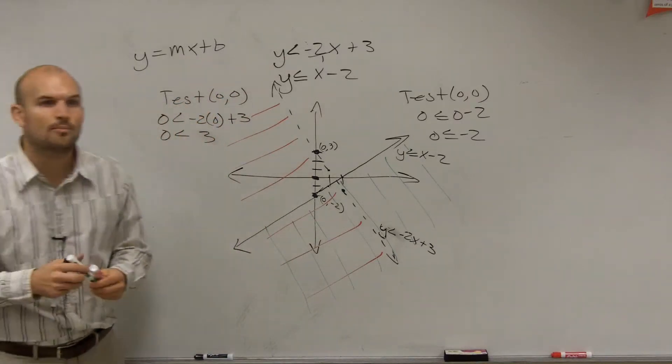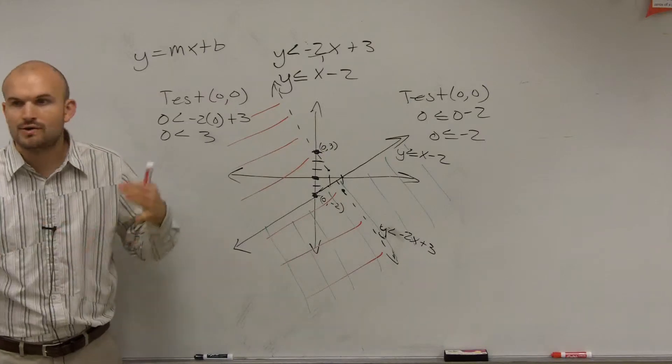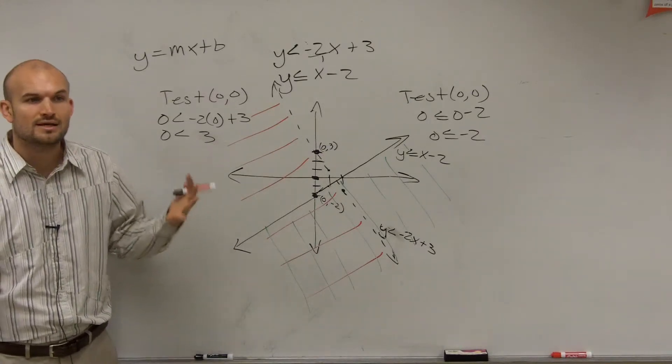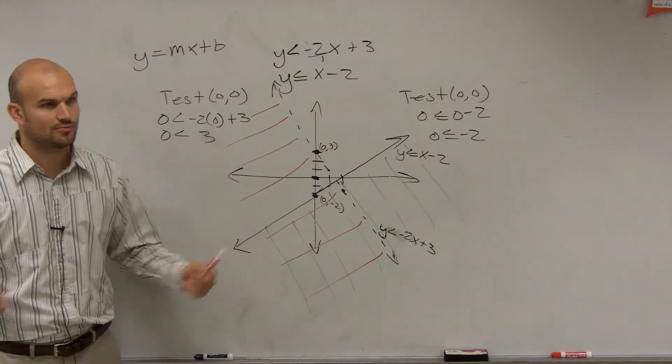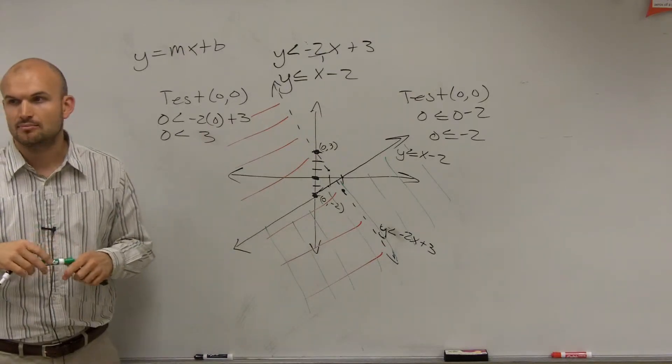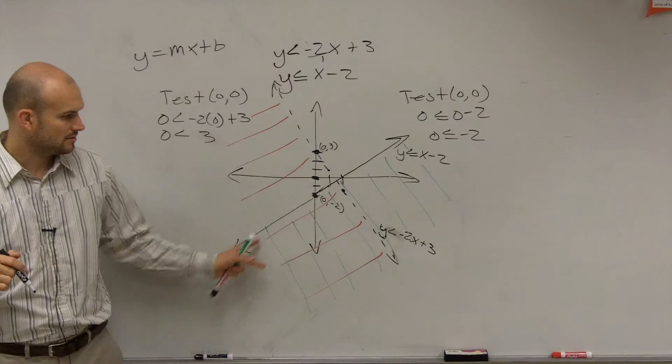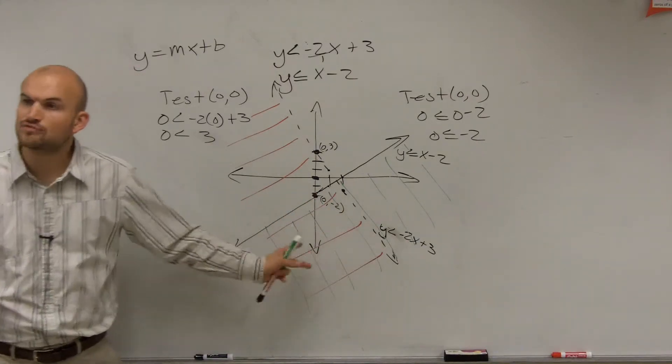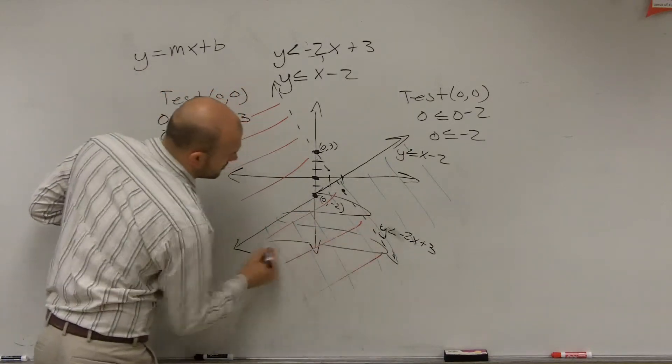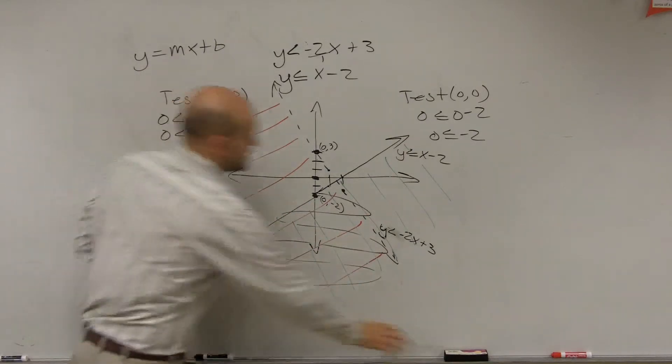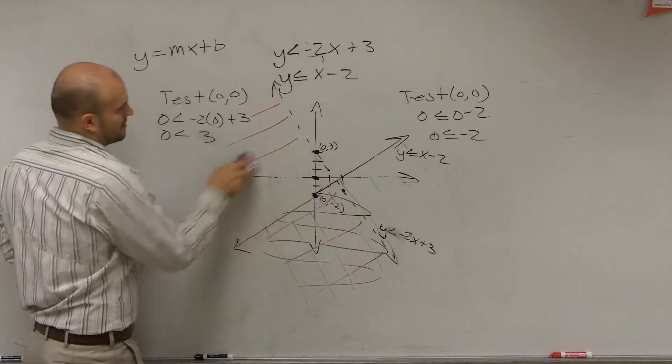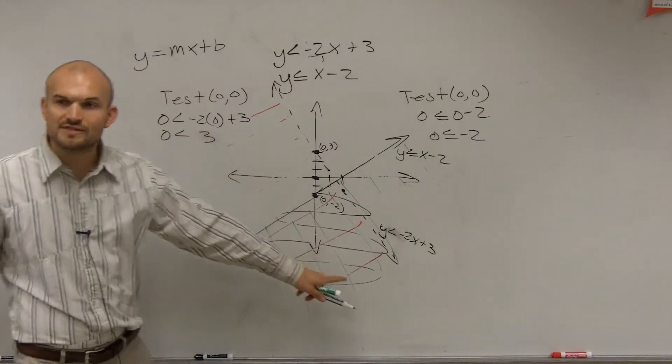And then where is the only part of this graph where you have both of your equations where the solution is true for both inequalities or both lines? This region, right? Do you guys see? This is the only region where it's true for both of them. So you can just kind of show like that. You can probably take your eraser and erase. So there you go. There's our feasible region.